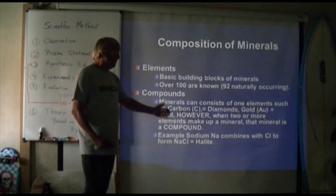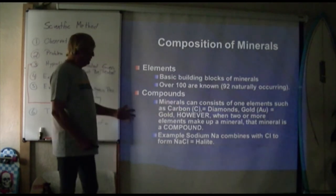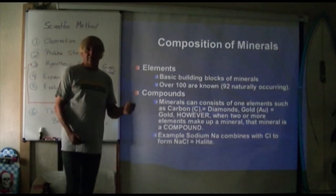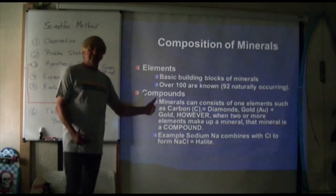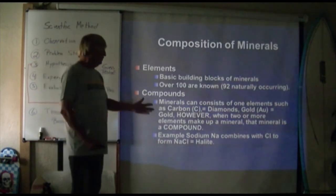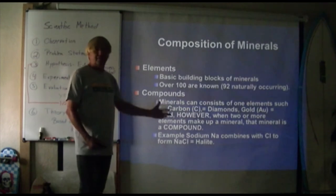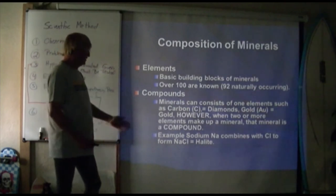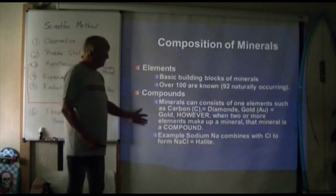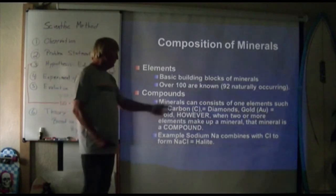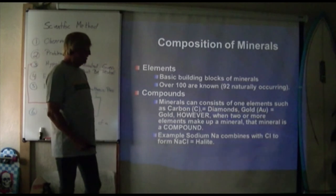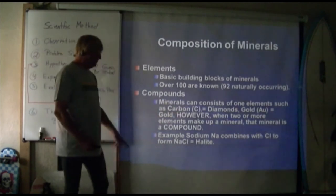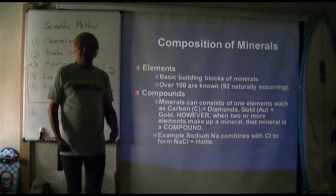A diamond is essentially nothing more than carbon. Carbon that forms at the surface under low pressure forms graphite, which is a very soft mineral — the total opposite of diamond. We actually use graphite in pencils, so pencils do not contain lead, they contain graphite. Two or more elements make up what we call a compound. An element that stands by itself is simply an element. A good example is sodium combined with chlorine to form sodium chloride — the mineral halite, or as people commonly call it, salt.